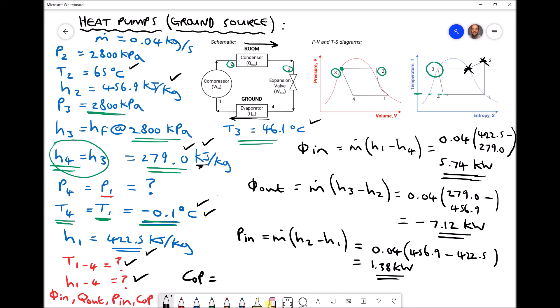In this case, the heat entering the room is the heat leaving the working fluid. So we have phi out, and as mentioned before, it's the magnitude that we're interested in, over P in. So we have 7.12 divided by 1.38 equals 5.2, once again accurate to one decimal place.